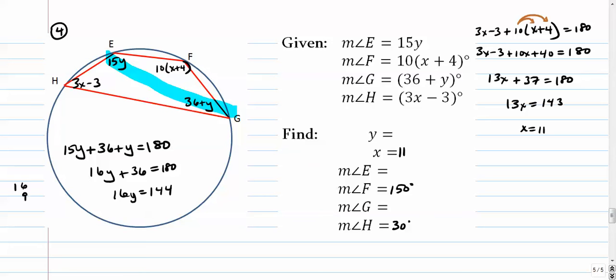Yeah, 9 looks pretty good. It's going to be 90 plus 54. So y is equal to 9. Plug that back in. 15 times 9. 15 times 9 is 135.